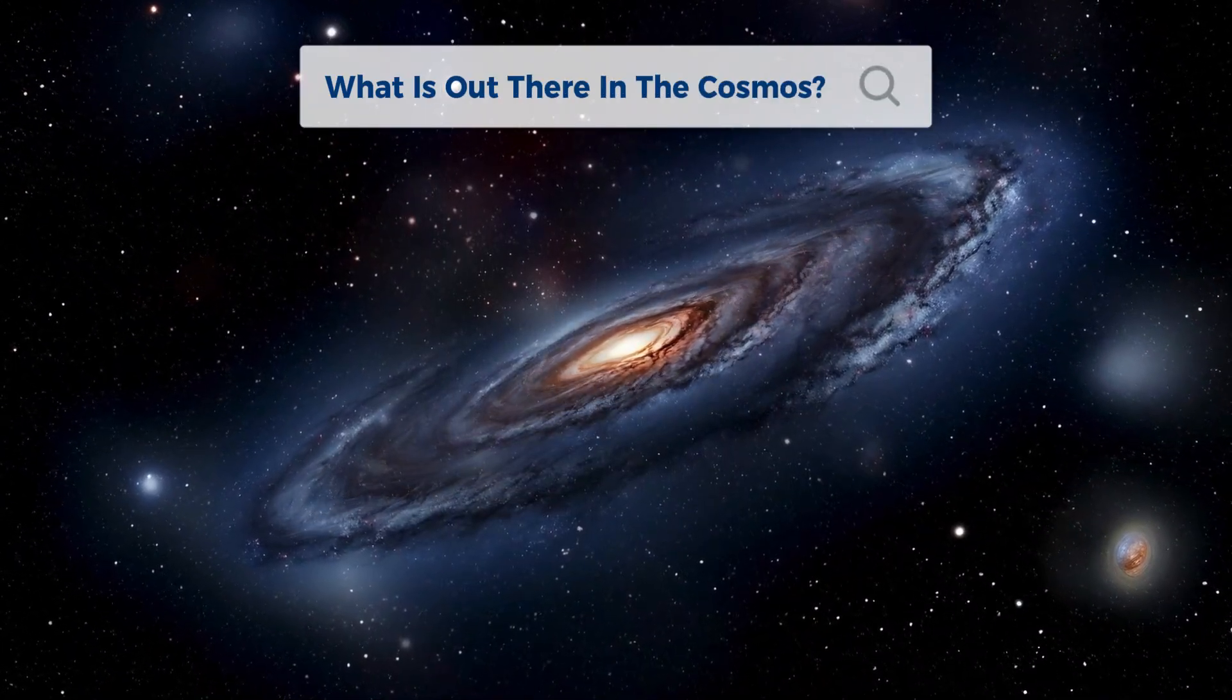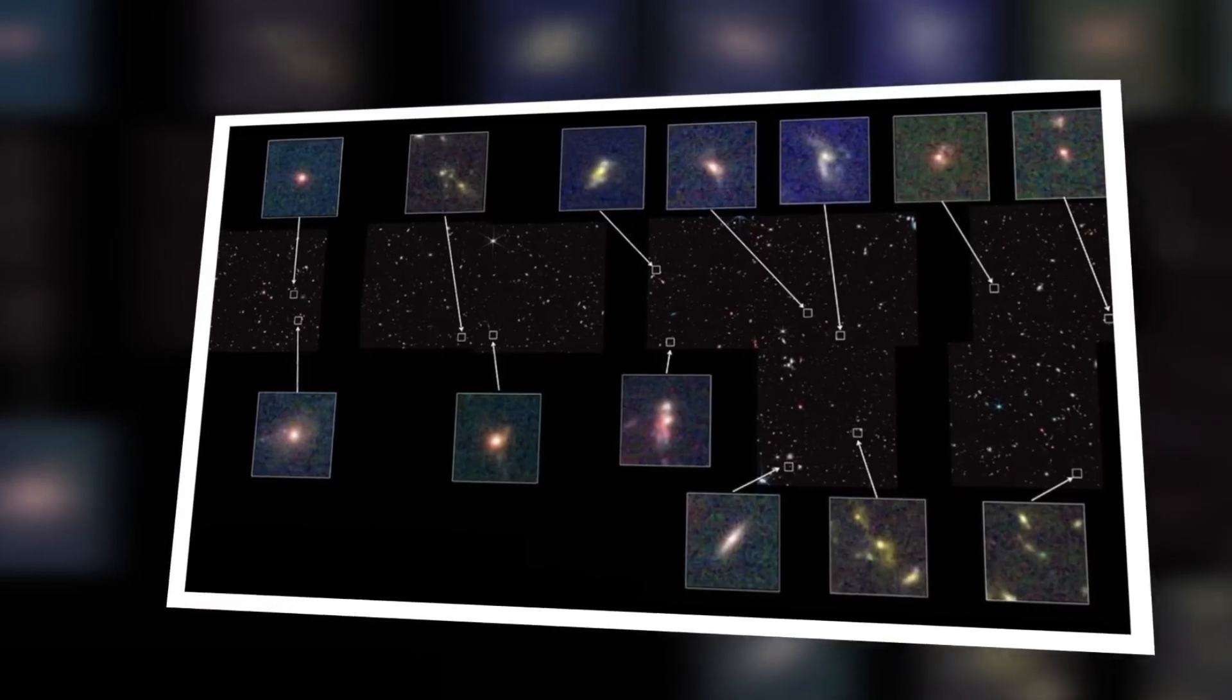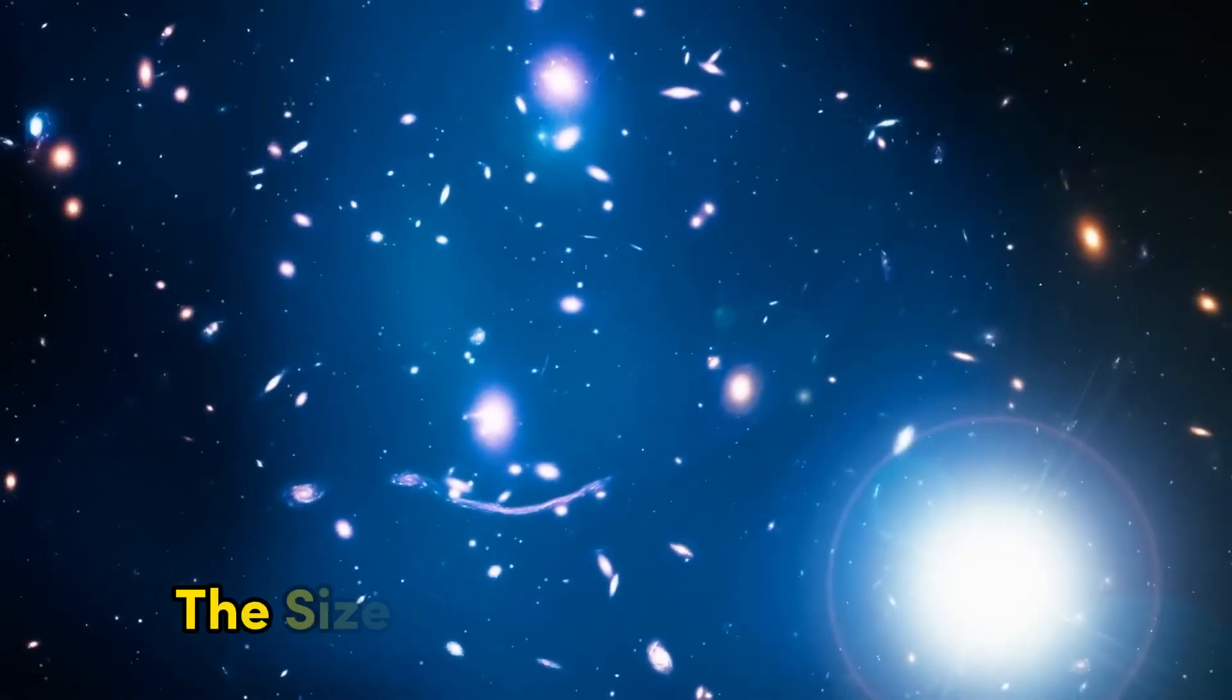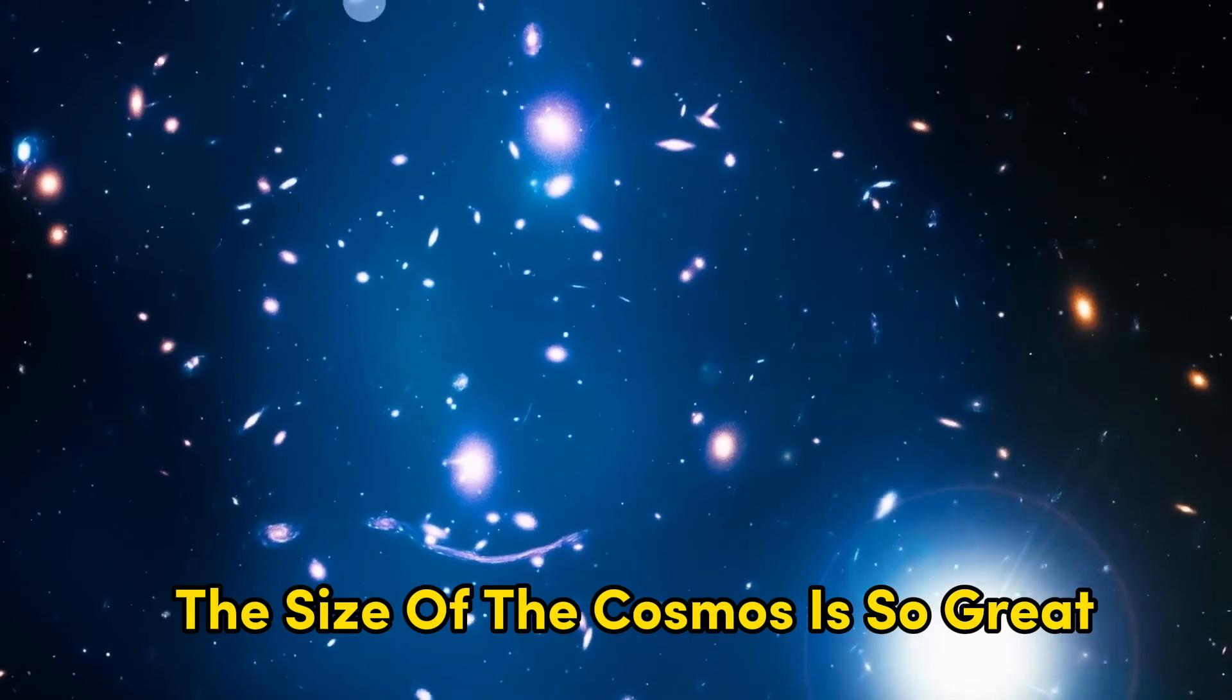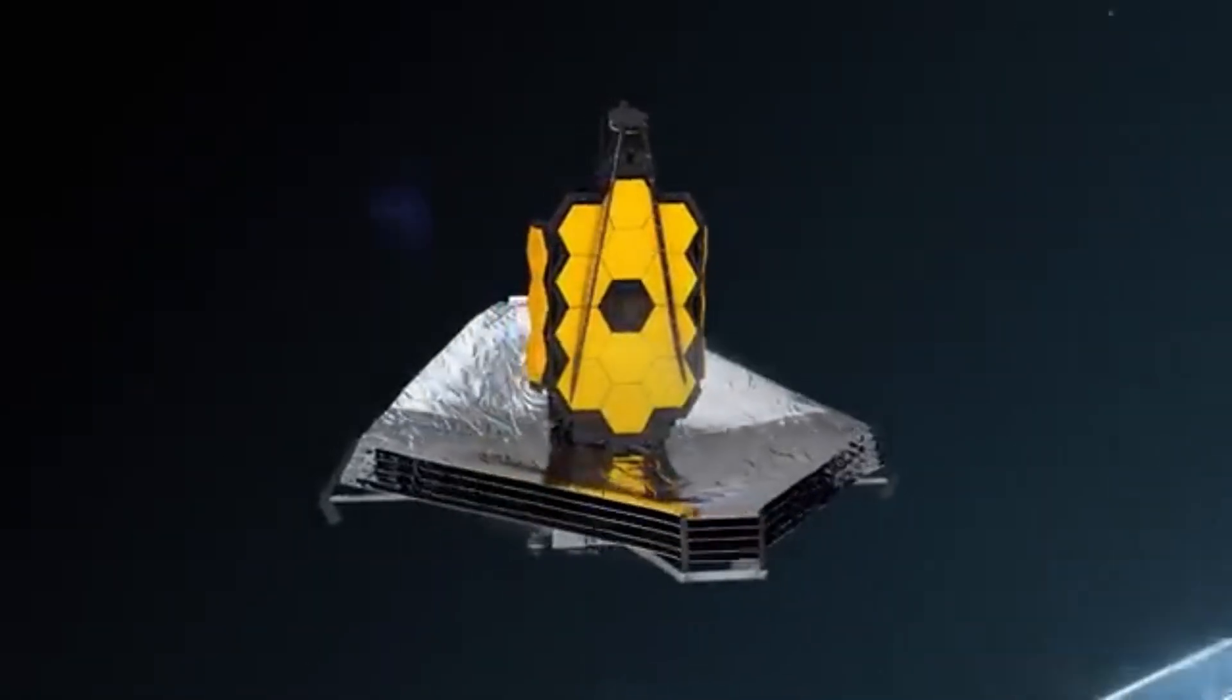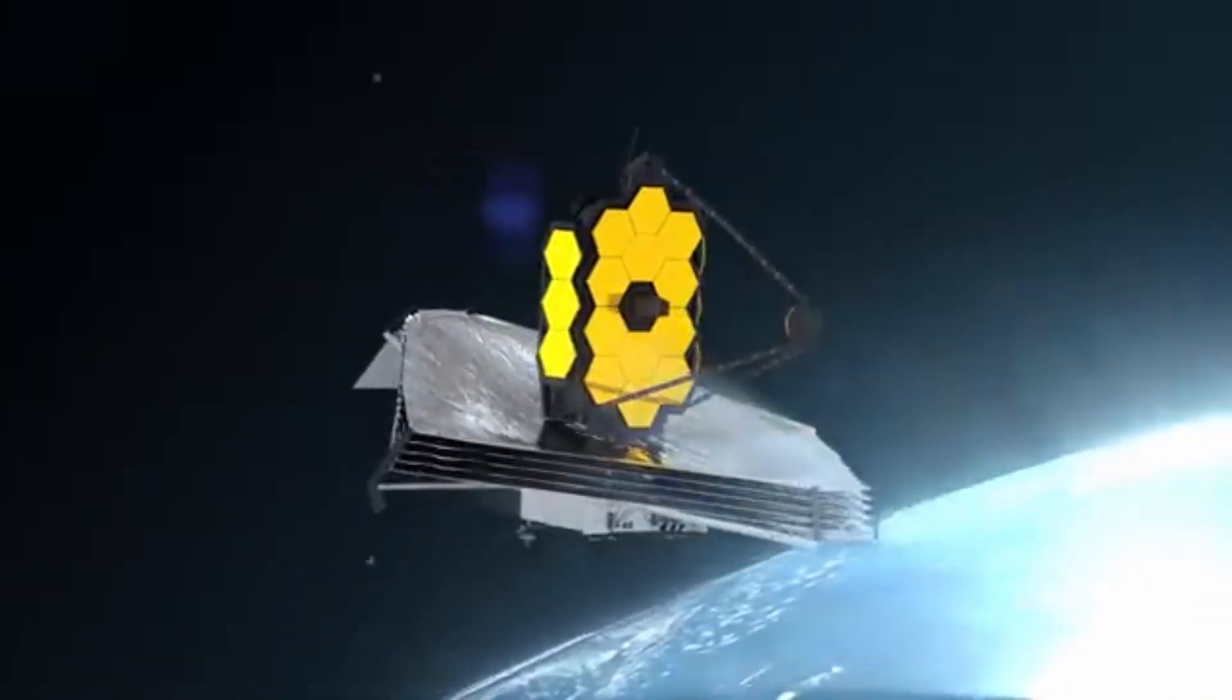What is out there in the cosmos? This question has confounded a lot of people before us and probably will confound a lot of people after us as well. The size of the cosmos is so great that, even with the unobservable portion excluded, astronomers have not been able to estimate its whole circumference.